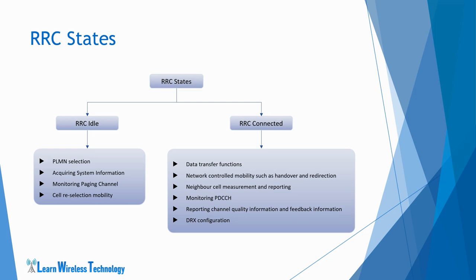The UE monitors PDCCH control signaling channel to check if any transmission over the shared data channel has been allocated to the UE, such as paging information, system information, or downlink data scheduled for the UE. The UE also reports channel quality information and feedback information to the eNodeB. The UE may be configured for DRX periods depending on activity level, which helps in UE power saving and efficient resource utilization.